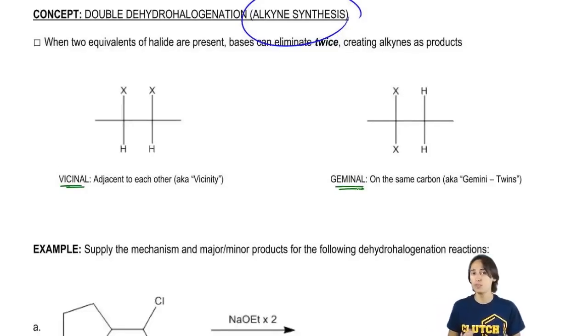So vicinal, you may have already heard it, but vicinal just means that they're next to each other. So a vicinal is basically a one-two relationship.